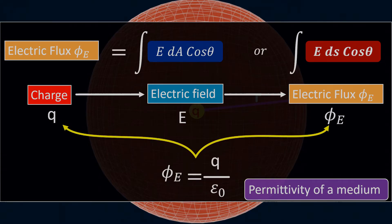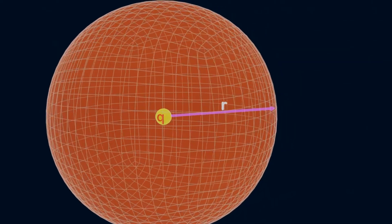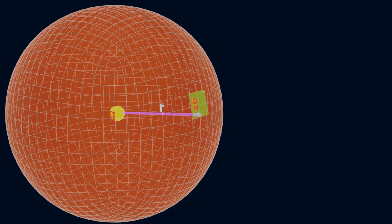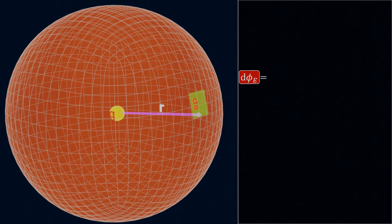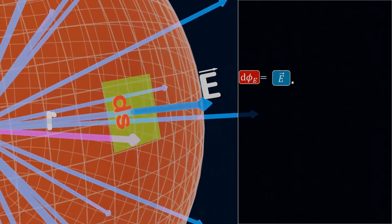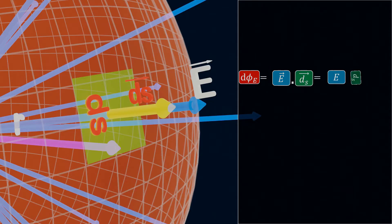Now let's understand the proof for the Gauss theorem. We know that for an imaginary spherical surface, if we consider a small element dS, then the electric flux dφ_E can be expressed as the dot product of the radially outward electric field E, caused by the charge Q, and the perpendicular surface area vector dS, which is equal to E dS cos theta.